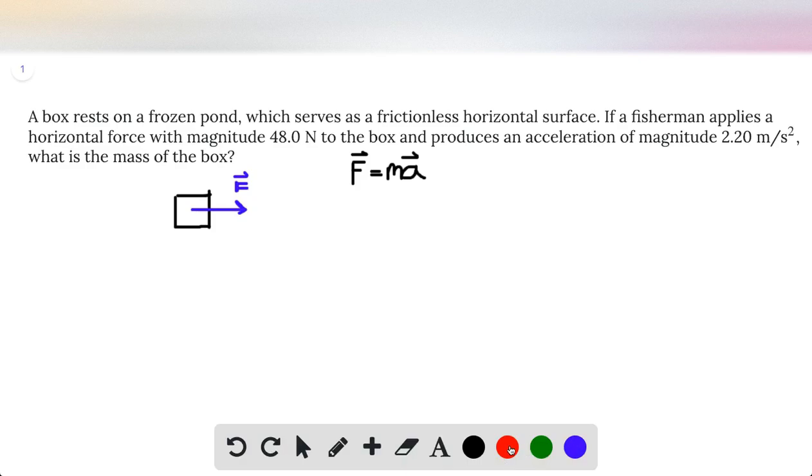In this problem, because we only have one force, we're also going to get an acceleration in the same direction, and it's just one-directional. So we can go ahead and remove the vector signs because we know that they're pointing the same direction, so we only have to worry about magnitude.